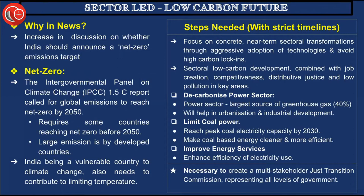Being net zero does not mean producing zero emissions. Rather, it means ensuring that the amount of carbon and other greenhouse gas emissions produced by the country, its industries, and other sources is matched by sufficient absorption capacity. For example, if industries, transportation, and animal husbandry in India produce 100 units of carbon, we should have forests and technological advances capable of absorbing exactly those 100 units back, making the net emissions zero.